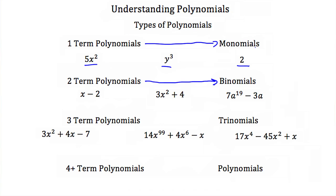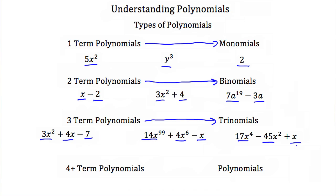Binomials are basically two monomials added or subtracted together — notice each has two terms. The x is one term and the negative 2 is the other; 3x squared is one term and 4 is the second; 7a to the 19 is our first term and negative 3a is our second. Now if we have a three-term polynomial, we call that a trinomial. Trinomials are just three monomials added or subtracted together. And if we have four or more terms in a polynomial, it doesn't really have a special name — we just call it a polynomial.